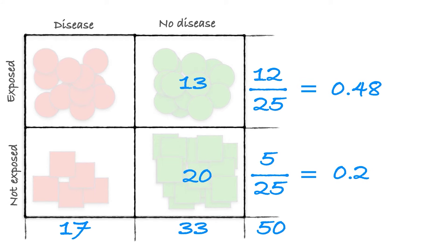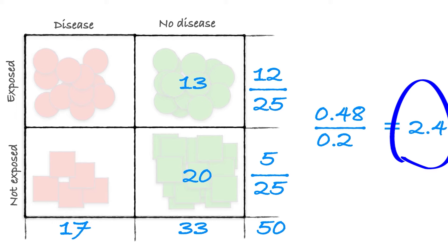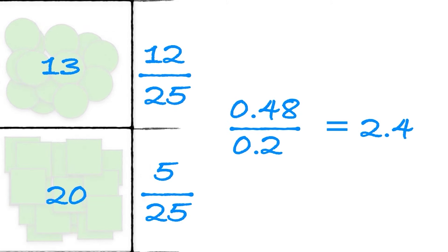And if we want to know how much more at-risk smokers are than non-smokers, we simply calculate the ratio. Voila. In this case, the risk ratio is 0.48 divided by 0.2, giving us a relative risk of 2.4. In other words, smokers are 2.4 times more likely to get this disease than non-smokers. Easy peasy, lemon squeezy.